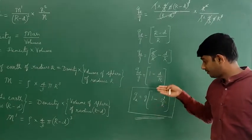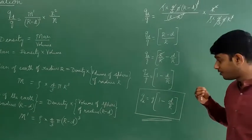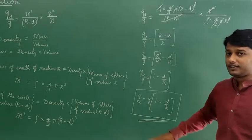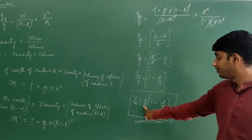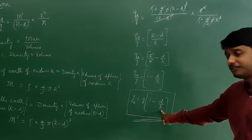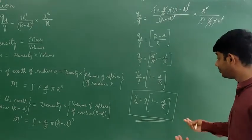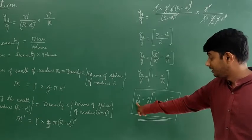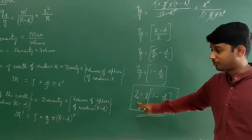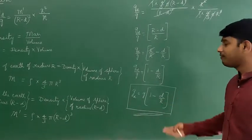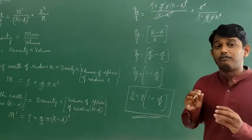We can calculate the acceleration due to gravity at any given depth using the equation g_d = g(1 − d/R). The acceleration due to gravity of the earth is 9.8 m/s². The radius of the earth is around 6400 kilometres. If the depth is given, we can calculate g_d, or if g_d is given, we can calculate the depth. This equation is very useful for problems.